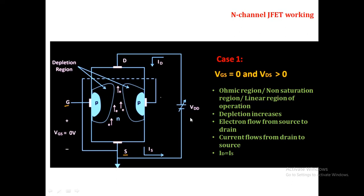In the linear region, as we increase VDS above 0, the current between drain and source increases. Electron flow increases towards drain and current increases as VDS increases. In this region, drain current ID is directly proportional to VDS — as VDS increases, current also increases.